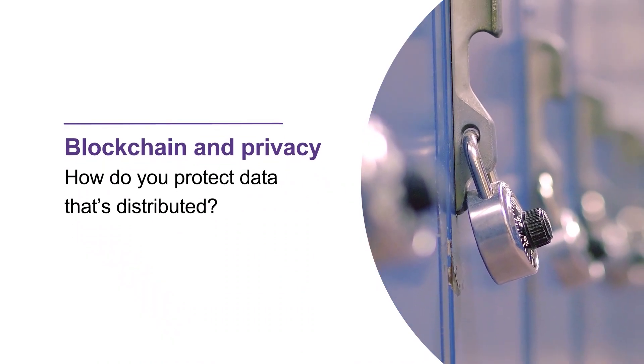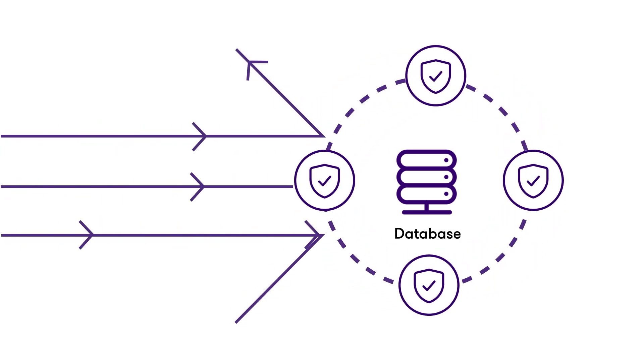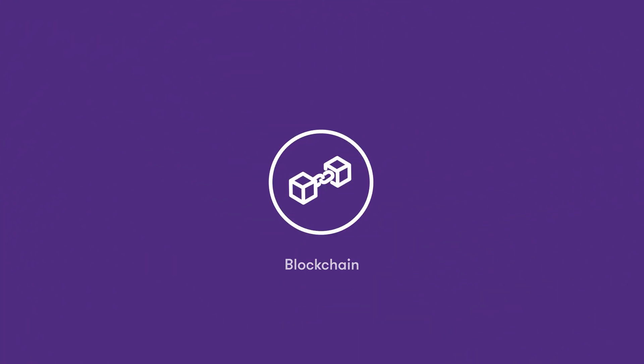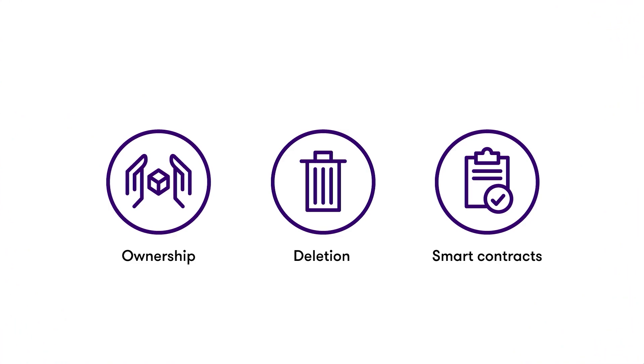How do you protect data that's distributed? Traditional databases store data in one place where security systems can control access. Blockchain copies the same data to many places, creating what we call a distributed ledger. All of these places communicate with each other to validate the data, which ensures data accuracy. To ensure the data privacy that regulations and users require, blockchain solutions need to take non-traditional approaches. Here are three security challenges that are unique to blockchain and how you can approach each one.